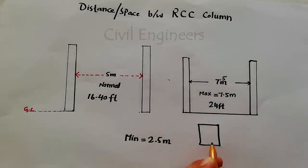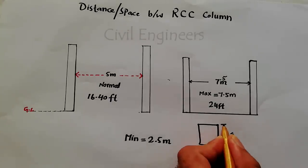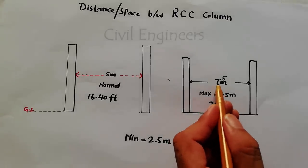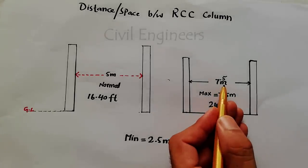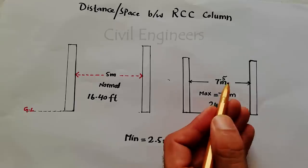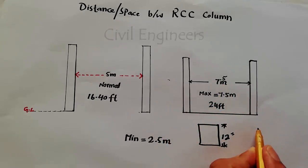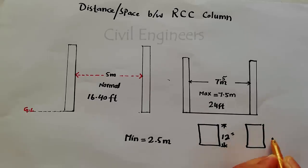Suppose if at 7.5 meter the depth of the column is 12 inch, for example, this is just an example. And if you increase 7.5 meter to 9 meter, or to 8 or 8.5 meter, then you will increase the depth of the column and cross section. Suppose you have to take 14 inch.